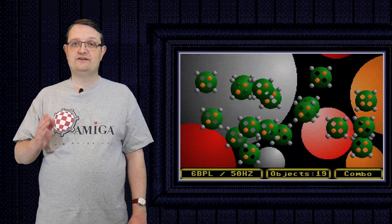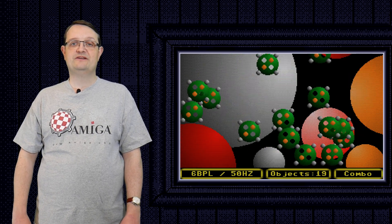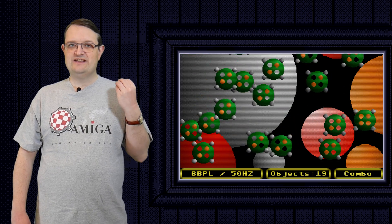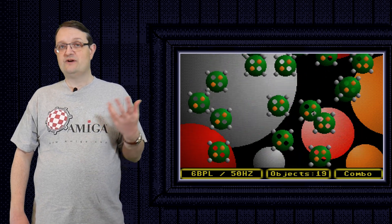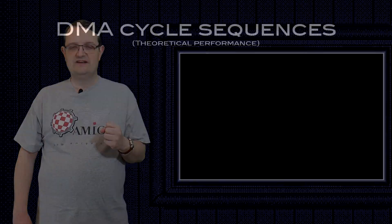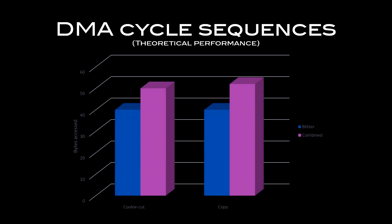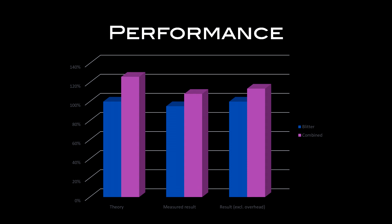Of course, it's all nice to have a theory telling us we should get higher performance when using the blitter and the CPU combined, but what about real life? Just how big is the performance gain? Looking at the example, you see that the effect is quite modest, but it is a bit more than you might expect. Our expected performance, as shown by the DMA cycle sequences, is that the blitter by itself will do 40 bytes in 20 cycles, whereas the combined blitter and CPU effect should do somewhere between 50 and 52 bytes per 20 cycles. I used the CIA timers in the Amiga to measure the result, and what I got was a little bit lower. The theoretical result was around 125–126%, but the measured result was considerably lower, clocking in at around 113%, which might seem low but in reality is a pretty nice boost, all things considered.